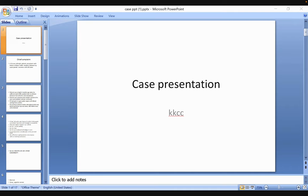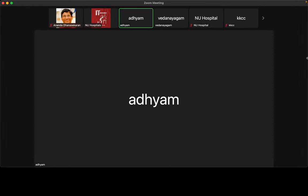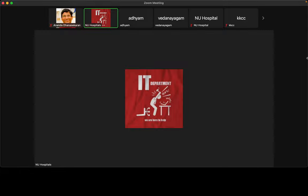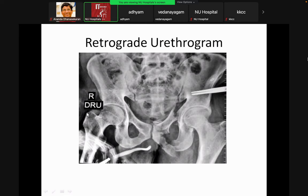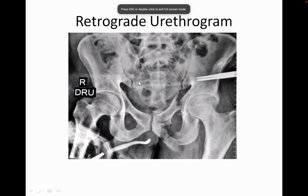This is the retrograde urethrogram film. Showing a fracture of the left suprapubic and infrapubic rami.